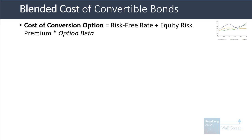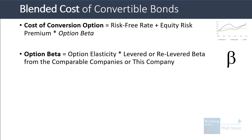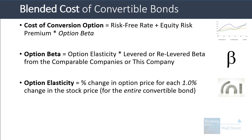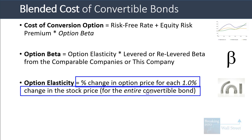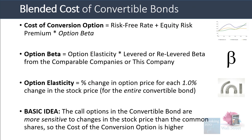The cost of the conversion option is the risk-free rate plus the equity risk premium times the option beta — very similar to the cost of equity, but we use the option beta rather than normal beta. The option beta equals the option elasticity times the levered beta. The option elasticity represents the percentage change in the option price for each one percent change in the stock price. The basic idea is that the call options within the convertible bond are more sensitive to changes in the stock price than common shares are — so the cost of the conversion option is higher than the cost of equity. If the stock price changes by one dollar, that one dollar change affects the price of the call option by more than one dollar.